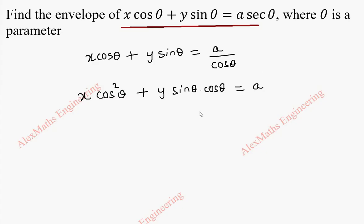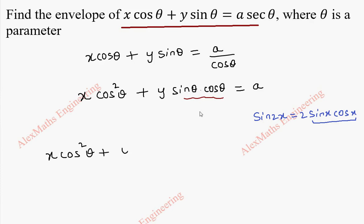Now we can use a formula. When we have sin2x it is 2sinx cosx, so sinx cosx can be written as sin2x by 2. Using it here: x cos²θ + y·sin2θ/2, replacing theta accordingly.